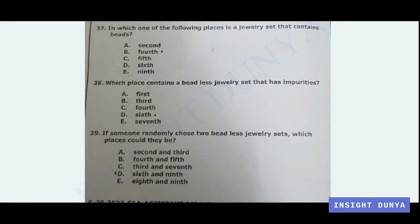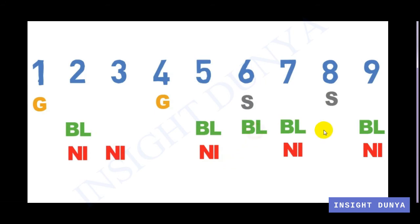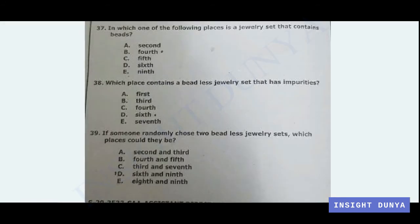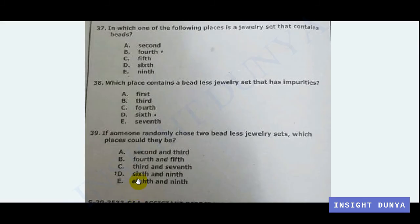Option C: third and seven — third has beads, so not the answer. Option D: sixth and nine — both sixth and nine are beadless, so this could be the answer. Option E: eight and nine — eight has beads, so not valid. Therefore, the correct answer is option D, sixth and nine.